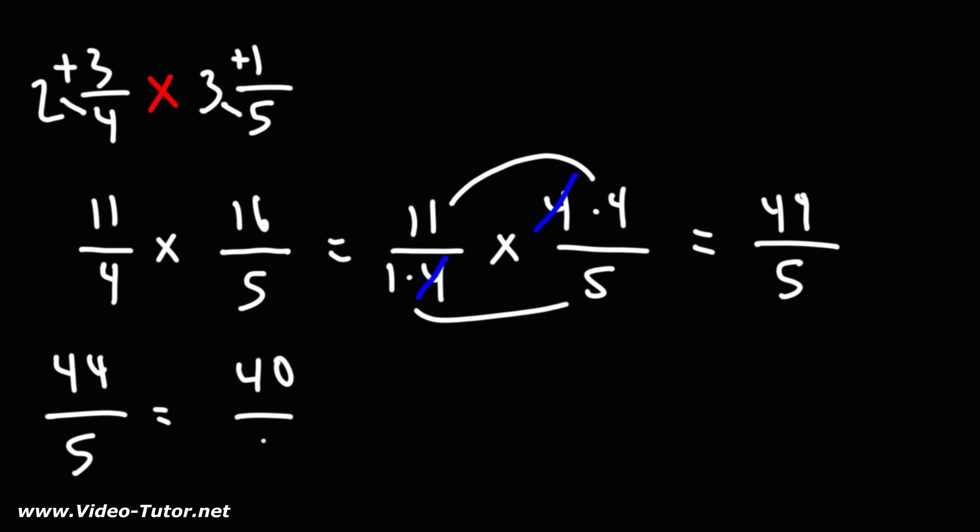And 44 minus 40 is 4. So we could break up 44 over 5 into 40 over 5 plus 4 over 5. 40 divided by 5 is 8. So now we have the whole number 8 plus the fraction 4 over 5.